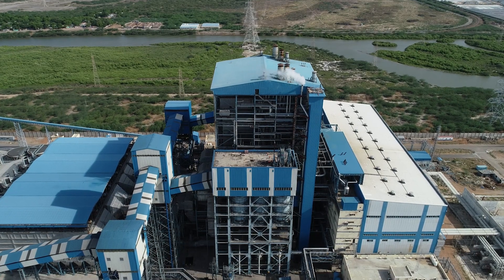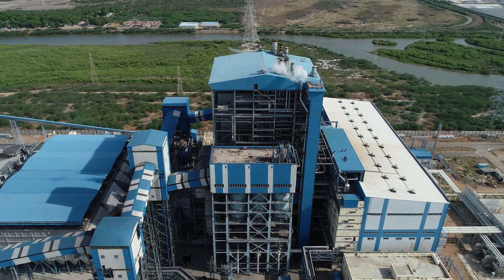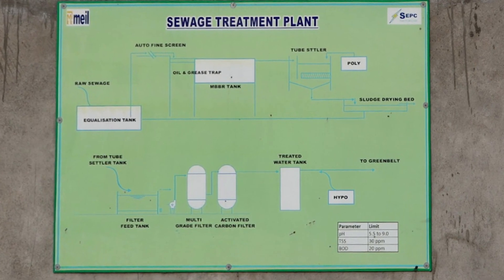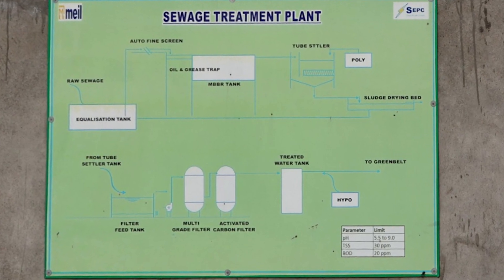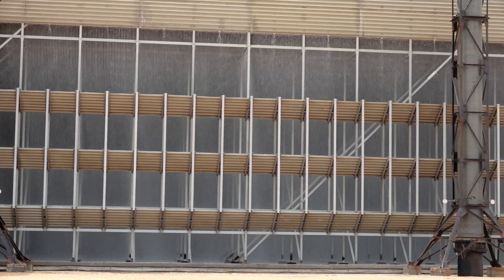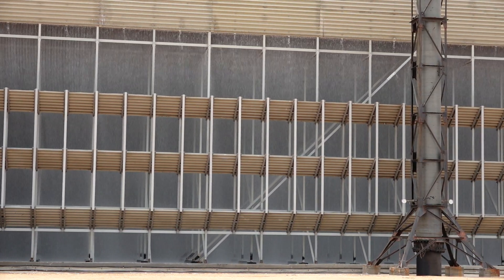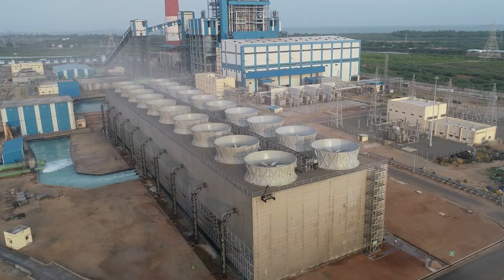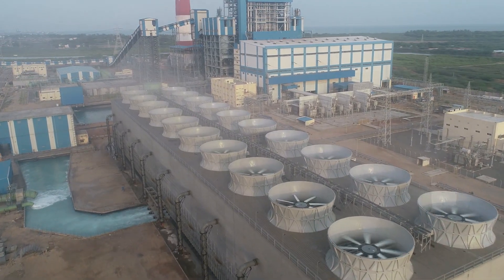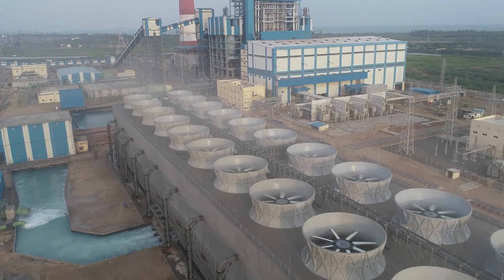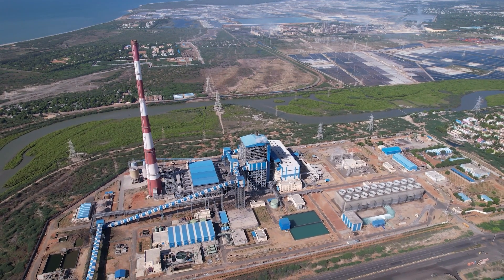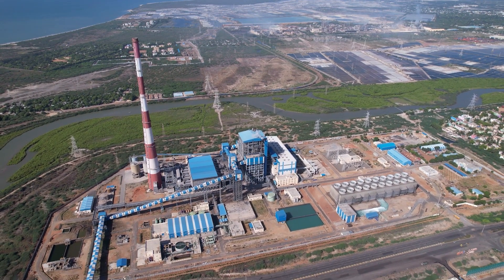This water we are using in the boiler to generate steam. In the sewage treatment plant, whatever sewage is generated inside our plant, we are collecting in a collecting chamber. From there we are treating it in a MBBR system and converting this water to be suitable for garden usage. The remaining water, along with the cooling water blowdown, we are sending back to the sea.